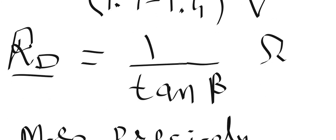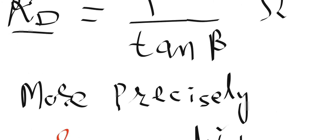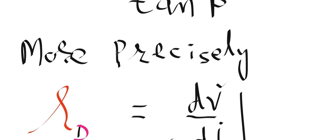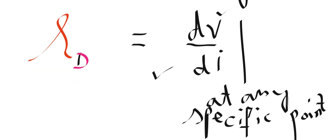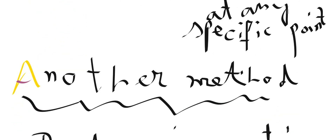The slope equals tan(β), so this is the calculation and you find the value of dynamic resistance. But this is not a very good method — it is not very accurate, because we are using an appreciable change in delta_V and delta_I.